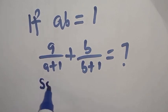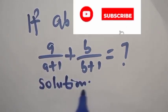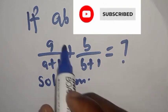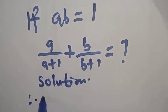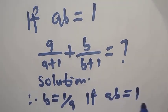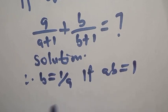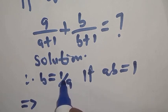Solution: If AB is equal to 1, then B will be equal to 1 over A. This implies that anywhere you see B, you substitute 1 over A.